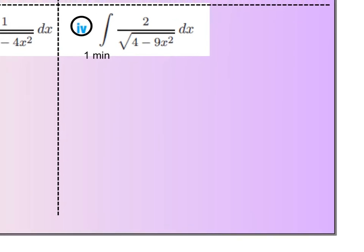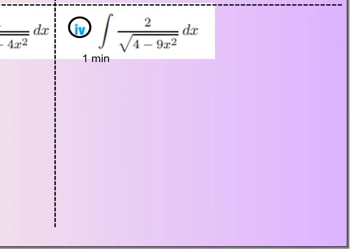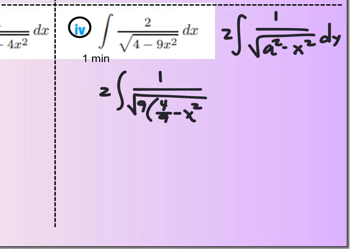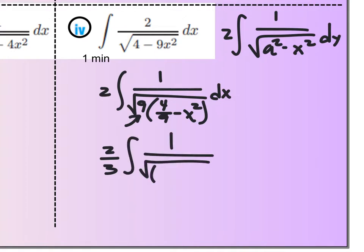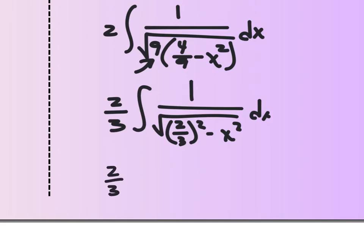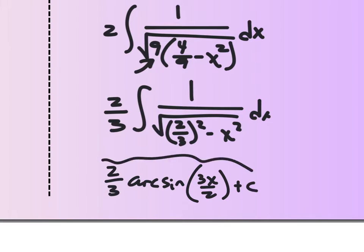Let's try problem 4. First thing I would do is pull that 2 out in front. Then I want to consider this as an arcsin form — a squared minus x squared. Let's pull out a 9. So I'll have 2 out in front, then 1 over the square root of 9 times (4/9 minus x squared) dx. The square root of 9 comes out as a 3, giving 2/3 times the integral of 1 over the square root of (2/3) squared minus x squared dx. Using our shortcut, this is 2/3 times arcsin(x over 2/3), which is 2/3 arcsin(3x/2), plus c.